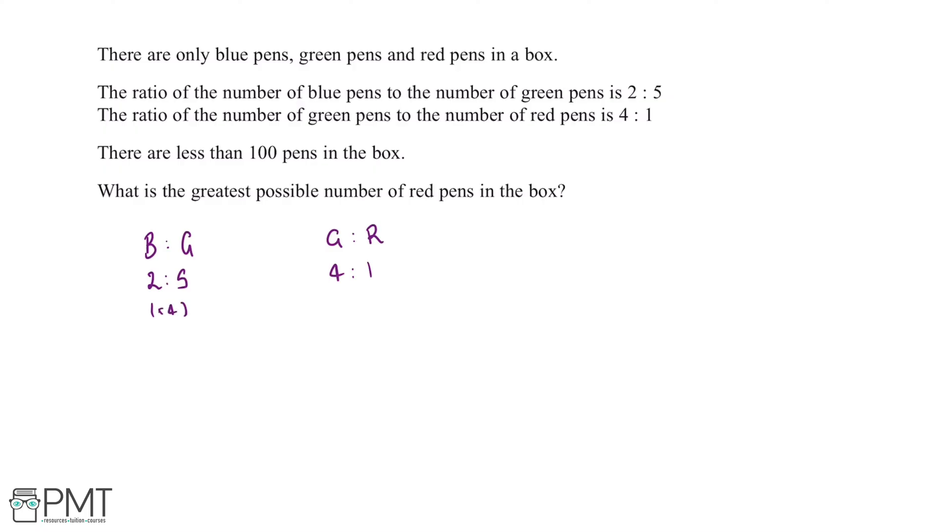So we can multiply this ratio by 4 and multiply this ratio by 5. So 2 multiplied by 4 gives us 8 and 5 multiplied by 4 gives us 20, and then 4 multiplied by 5 gives us 20 and 1 multiplied by 5 gives us 5.